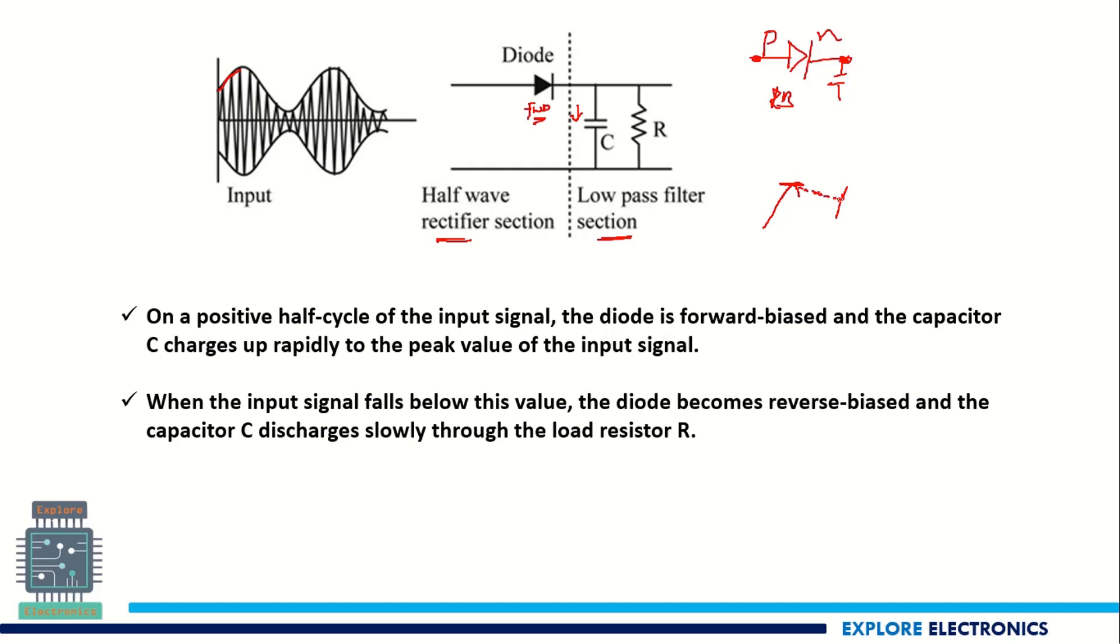And again, when the input increases to the value more than the capacitor voltage, diode becomes forward biased and it will conduct and capacitor will be charged from that point again to the peak. So this process continues, capacitor will be charging and discharging.